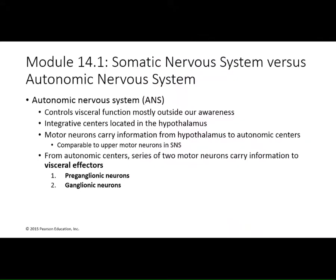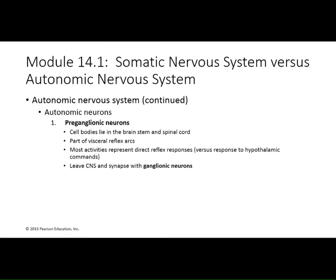The autonomic nervous system works with visceral functions — things mostly outside of your awareness. It is integrated through the hypothalamus, and motor neurons causing involuntary movement send instructions to smooth muscles, cardiac muscle, and glands through the hypothalamus. For this system, there are always two neurons: a pre-ganglionic and a post-ganglionic neuron. The pre-ganglionic neuron is in the brainstem or spinal cord and is part of reflex arcs over which you don't have control.